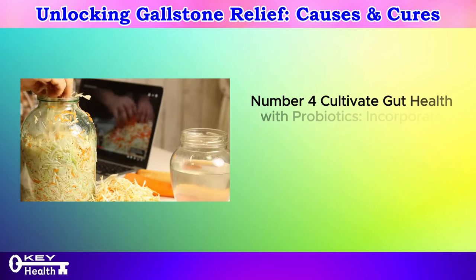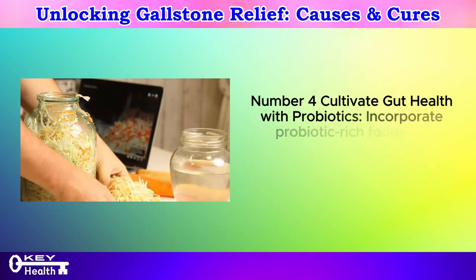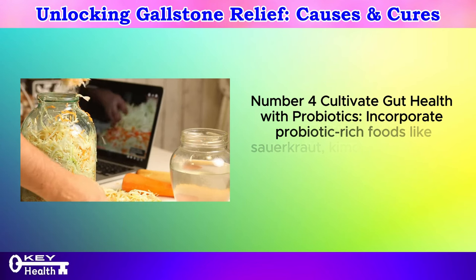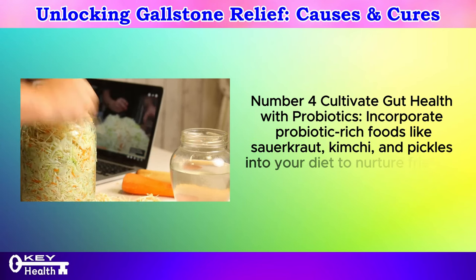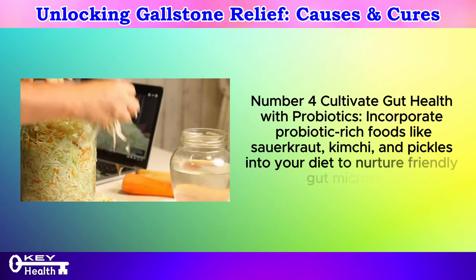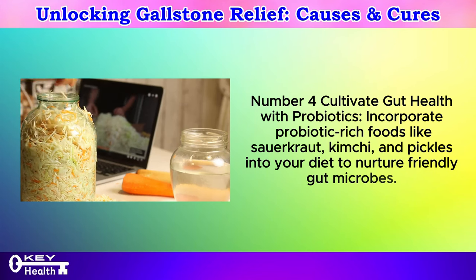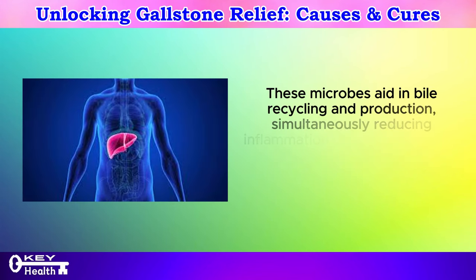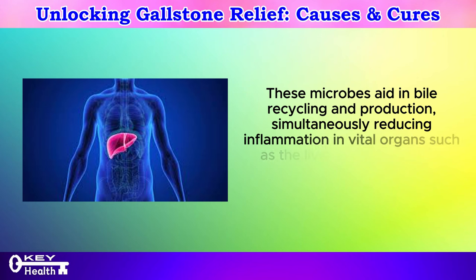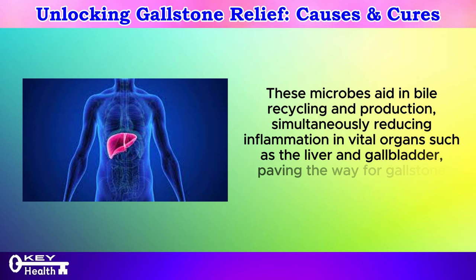Number 4: Cultivate gut health with probiotics. Incorporate probiotic-rich foods like sauerkraut, kimchi, and pickles into your diet to nurture friendly gut microbes. These microbes aid in bile recycling and production, simultaneously reducing inflammation in vital organs such as the liver and gallbladder, paving the way for gallstone prevention.